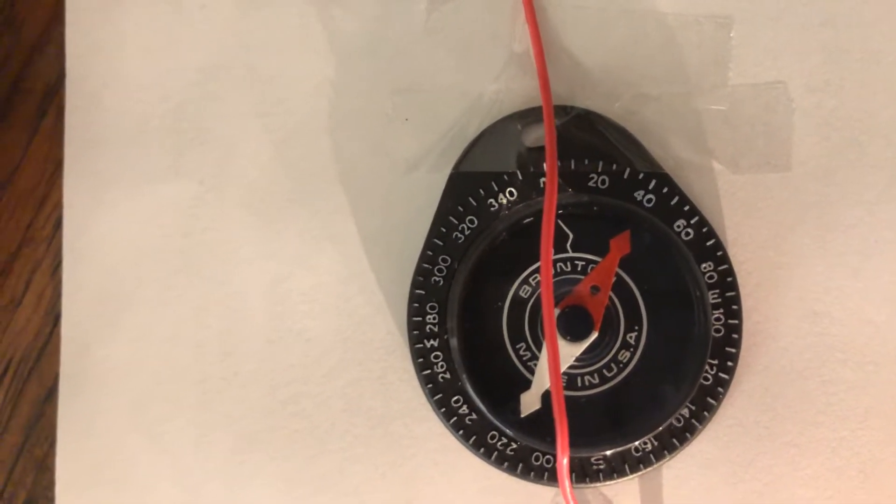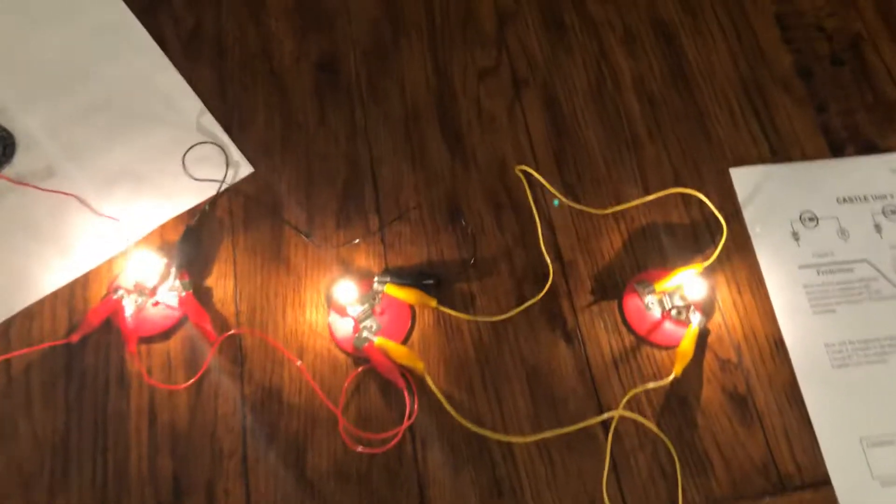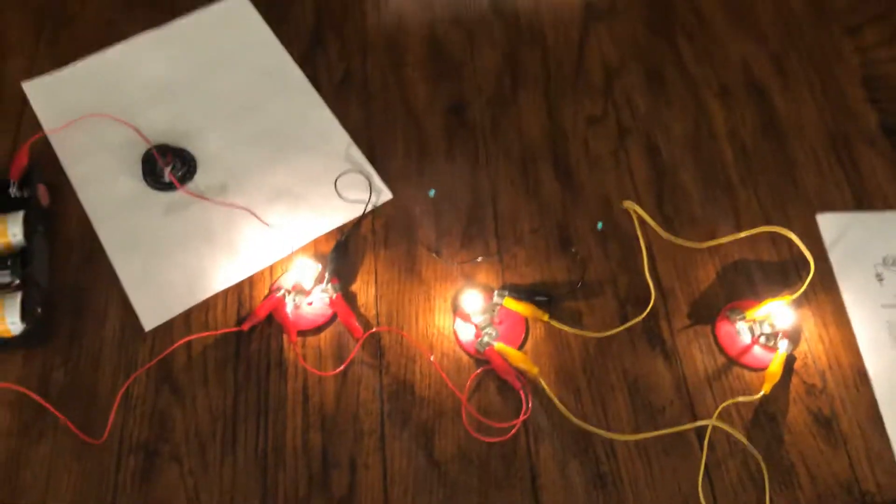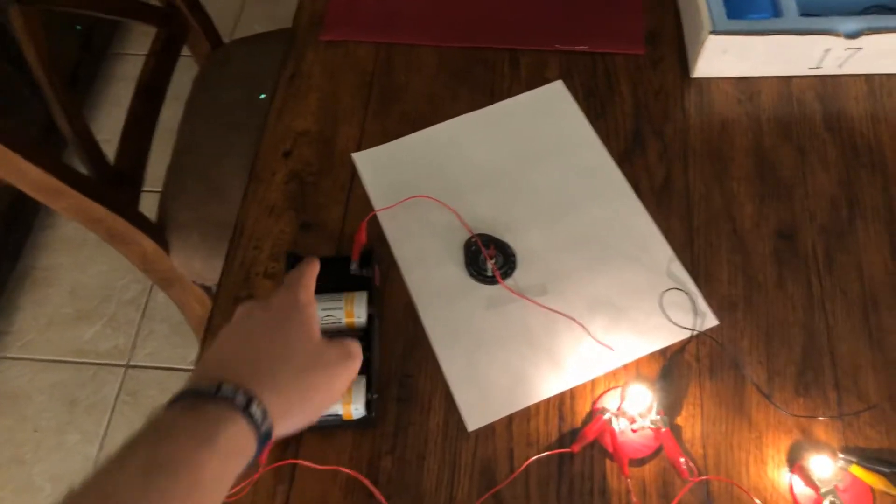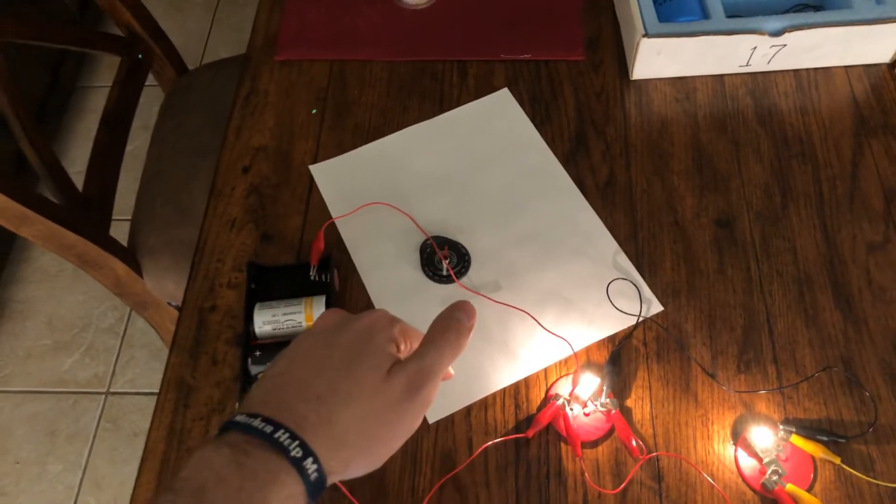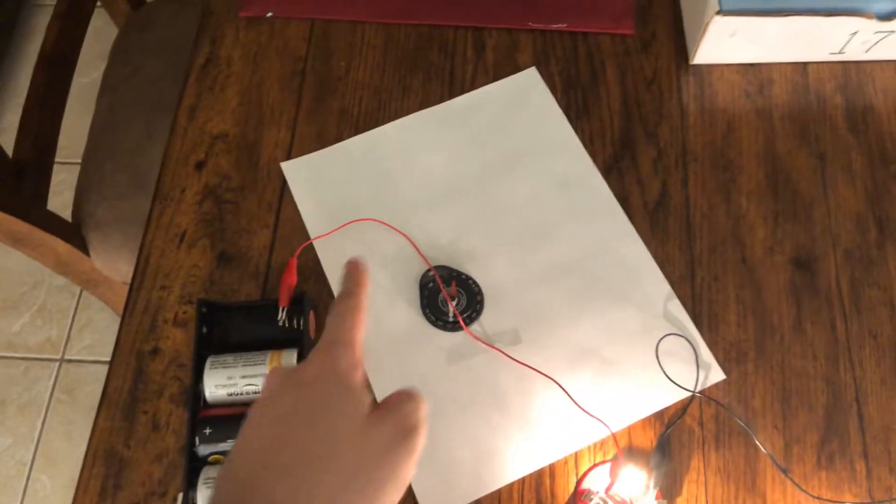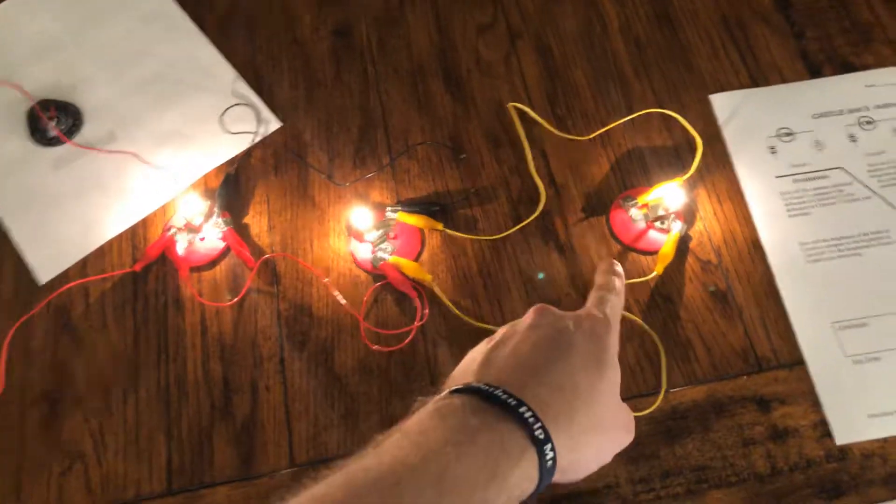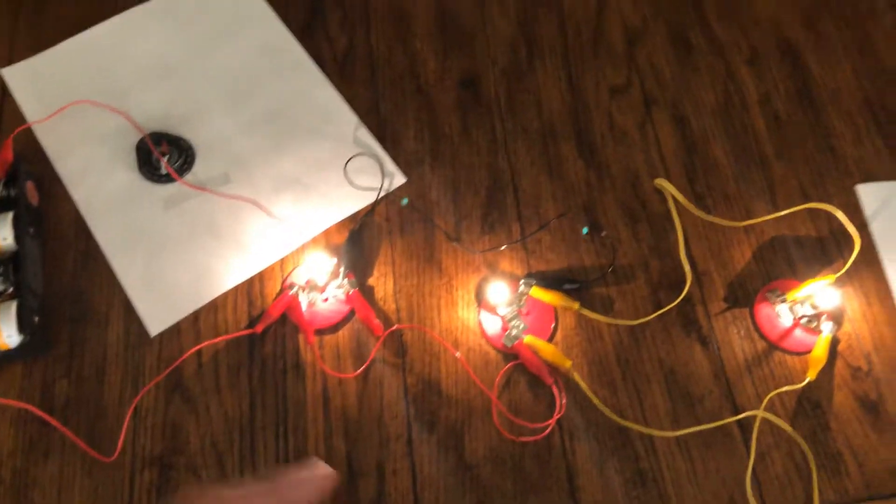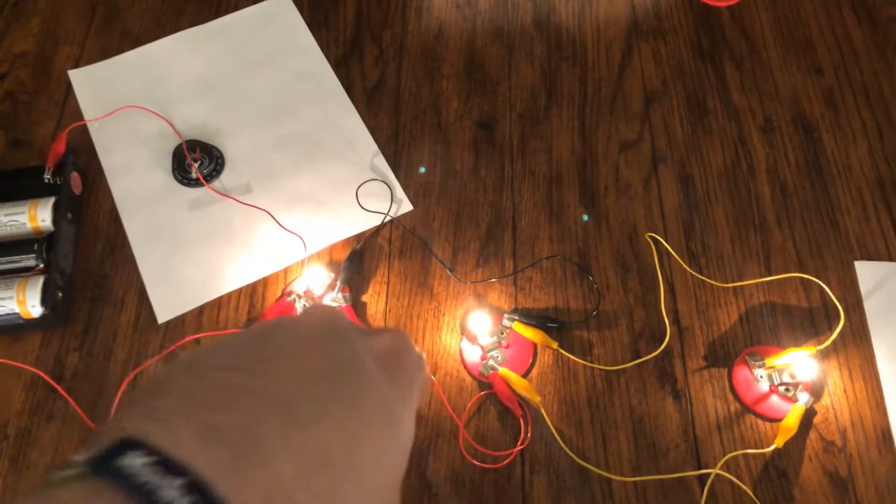And so we have seen, rather than adding the bulbs and seeing that total resistance increase, which would mean that our charge flow through this battery would be decreasing, we've actually seen the charge flow through the battery increase. This means that adding more bulbs in more branches has made the overall resistance of our circuit go down.